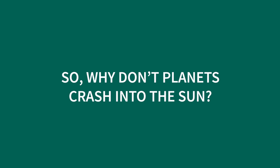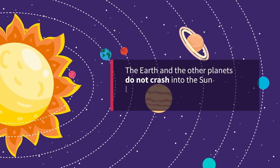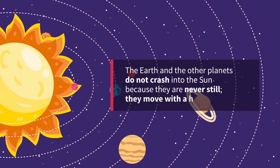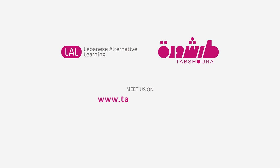So why don't planets crash into the Sun? The Earth and the other planets do not crash into the Sun because they are never still. They move with a constant velocity.